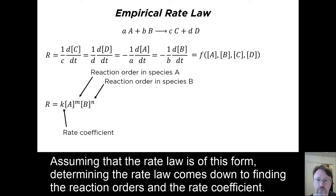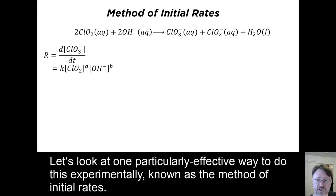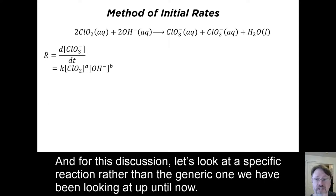Assuming that the rate law is of this form, determining the rate law comes down to finding the reaction orders and the rate coefficient. Let's look at one particularly effective way to do this experimentally, known as the method of initial rates. And for this discussion, let's look at a specific reaction rather than the generic one we've been looking at up till now.